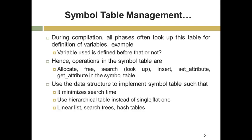During compilation, all the phases often look up this table for definition of variables — for example, whether the variable used is defined before that or not. Along with symbol table creation, the management includes: allocate memory for a new variable, free the memory of the variable that is out of scope, search for a specific variable or function name, insert a new entry, set attribute, and get attribute. The data structure used to implement the symbol table should be selected such that it minimizes the search time. We can use a hierarchical table instead of a single flat table to reduce the search time. Other options to implement symbol table are linear list, search trees, or hash tables.